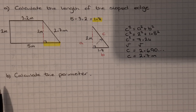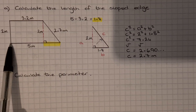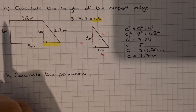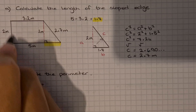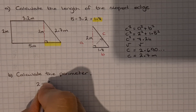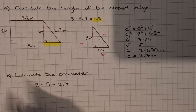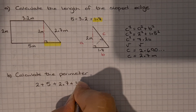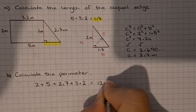For part B we need to use our answer from part A, and it says calculate the perimeter. The perimeter is just the distance around the outside. Looking at all the outside edges — ignoring the red one because that's on the inside — we add: 2, plus 5, plus 2.7 (the one we worked out), plus 3.2, which comes to 12.9 metres.